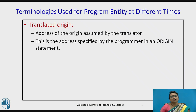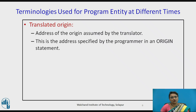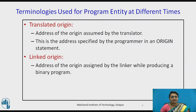Now regarding origins: the translated origin is the address of the origin assumed by the translator. When the translator is translating the source program into the object program, it assumes an address from the beginning and changes addresses accordingly — this is the translated origin, specified by the programmer in an origin statement, as in an assembler where the origin statement indicates where the program starts. The linked origin is the address of the origin assigned by the linker while producing a binary program.